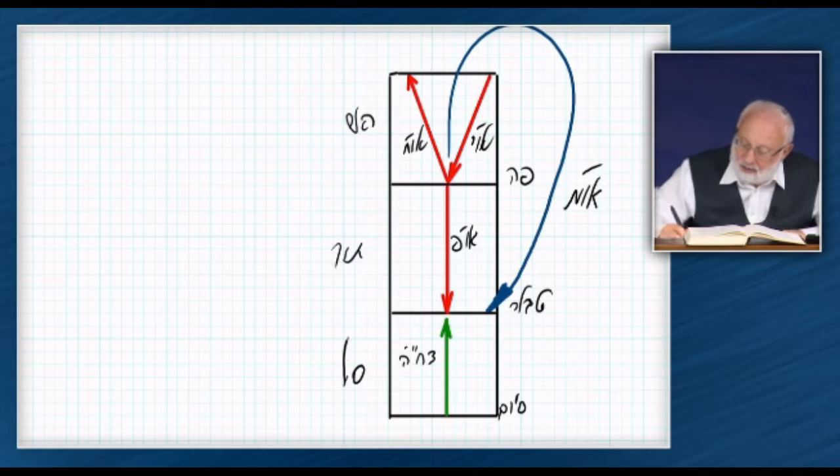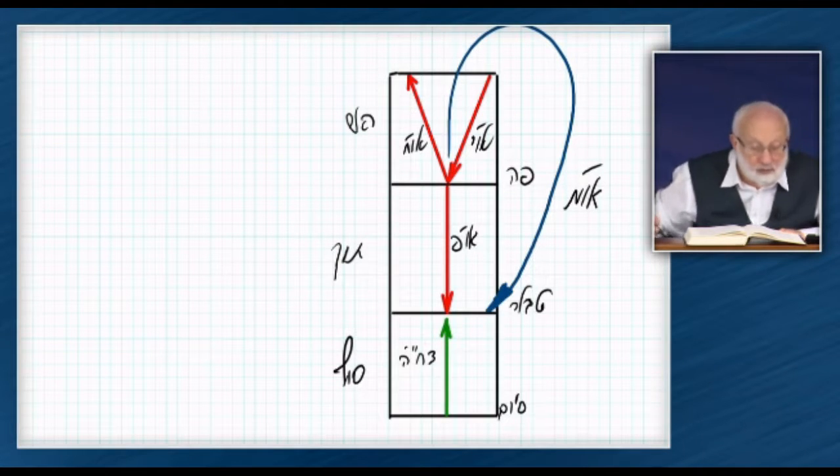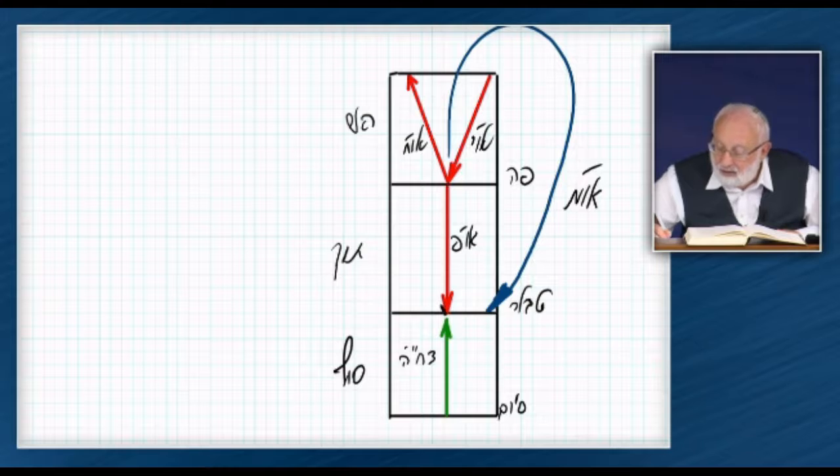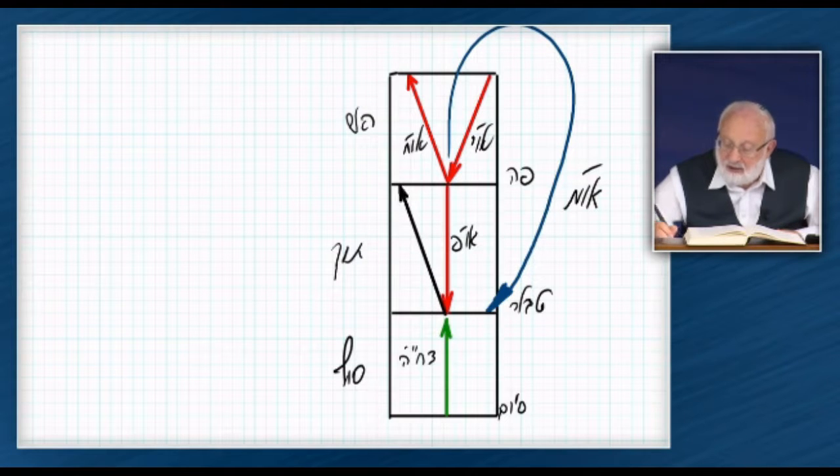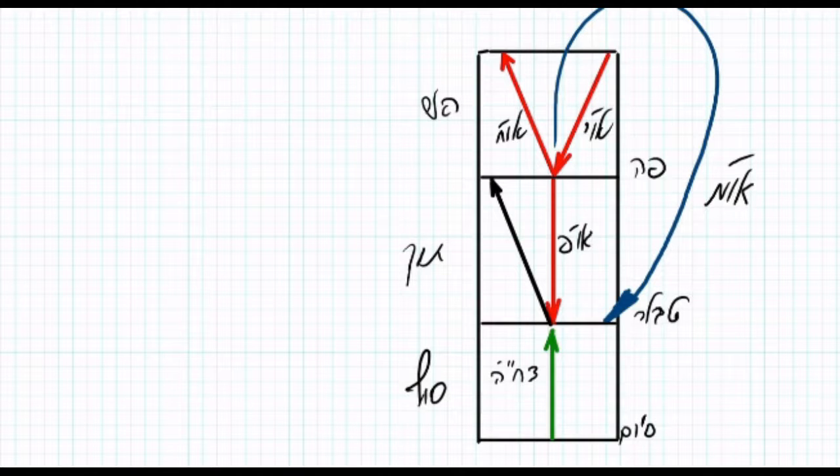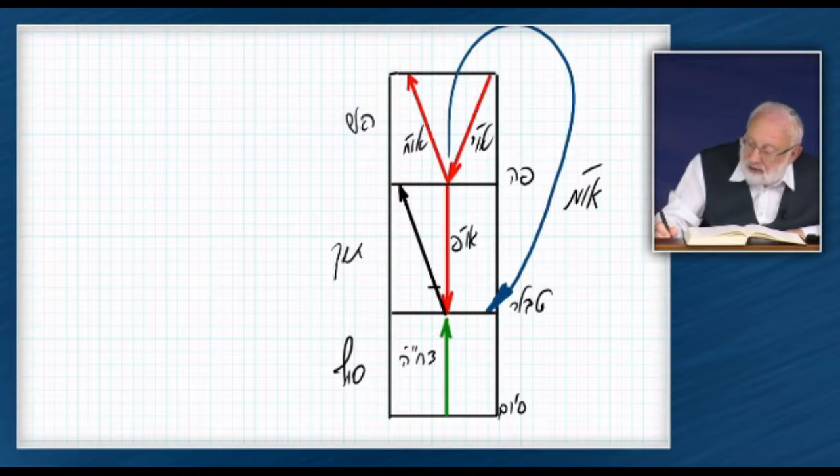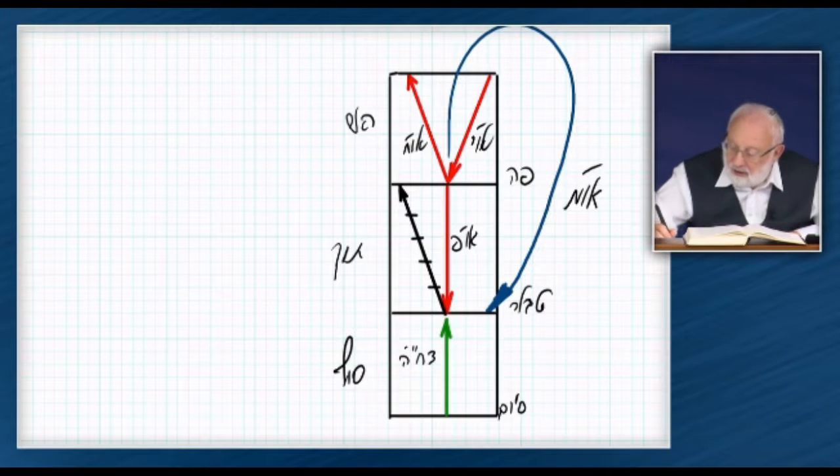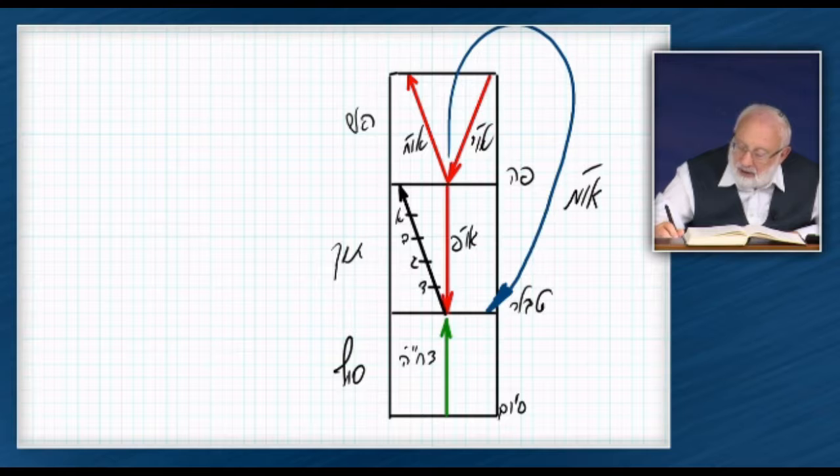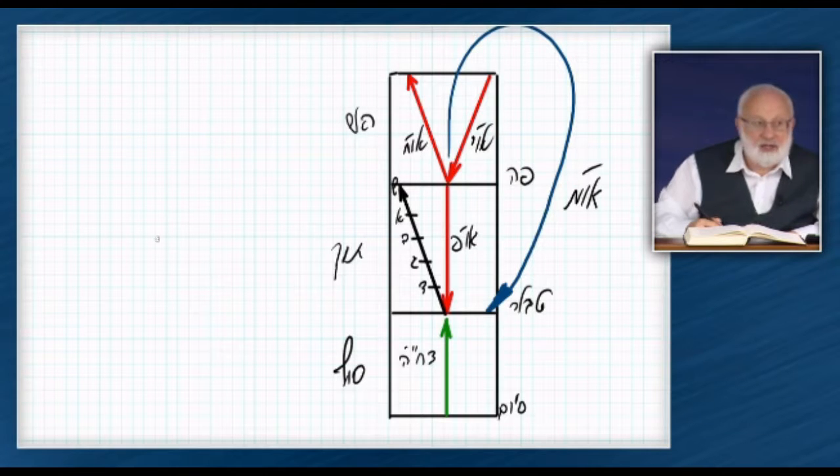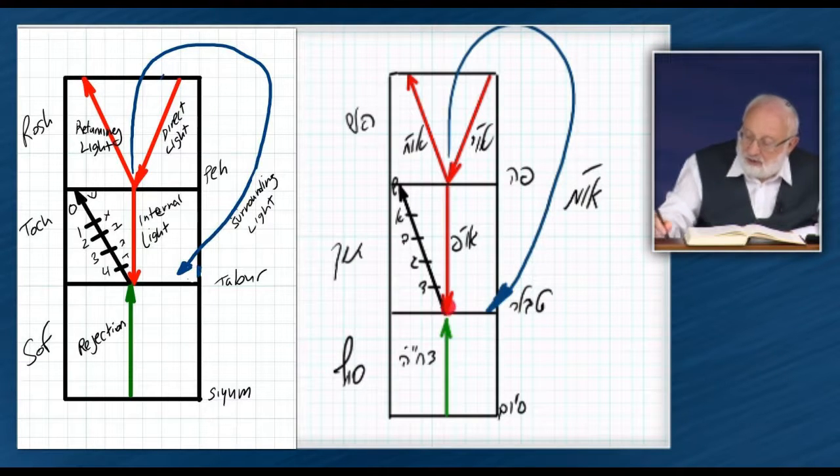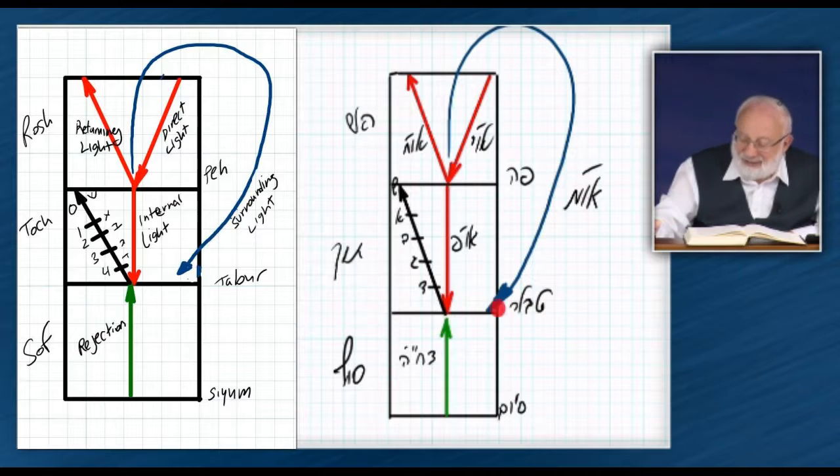Rosh, Toch, Sof. Roshimot, Roshimot. Roshimot comes as a result - it's a result of the decision to depart and to return to the Bekhina Aleph. And when he purifies on this level, then what he or it - the parts of Aviut are Dalet, Gimel, Bet, Alef, Shoresh - these are degrees of purification. So from the strong work that he did in order to bestow